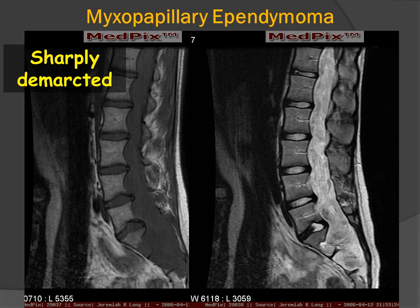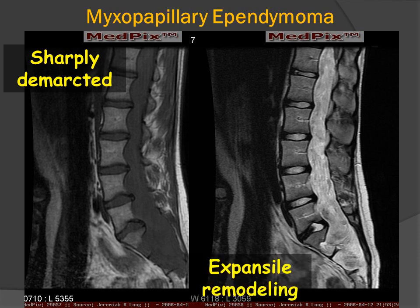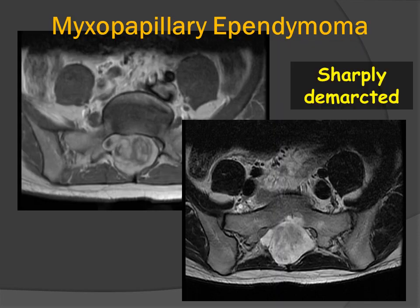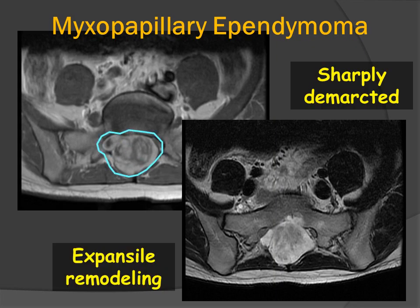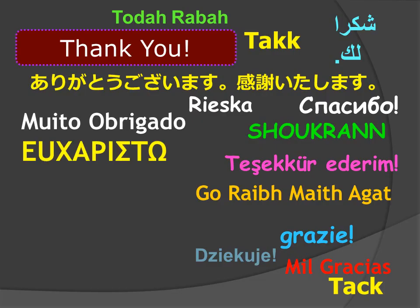Here is an even larger example of a myxopapillary ependymoma coming off the tip of the conus medullaris, producing significant expansile remodeling and concave erosion of the dorsal aspects of the lumbar and sacral vertebral bodies. In the same patient on cross-sectional imaging, we can see the tumor extending out laterally into the sacrum, presumably following along the subarachnoid space of the root sleeves around the exiting sacral nerves.